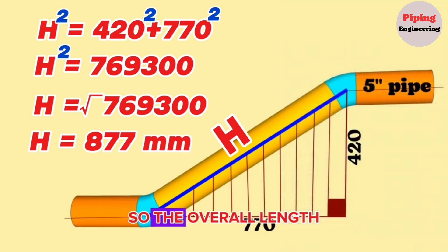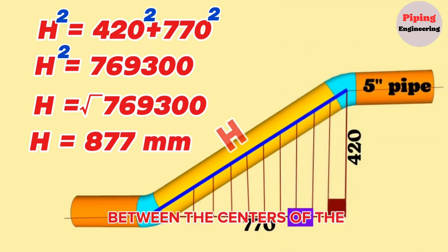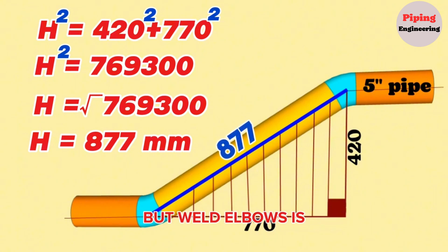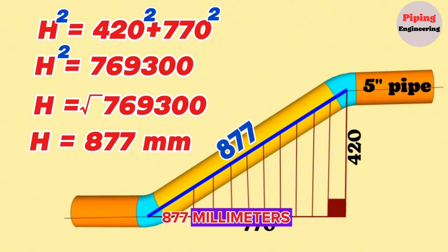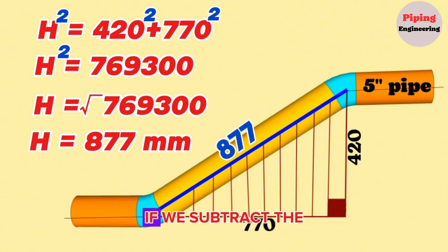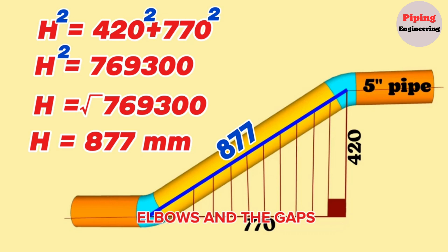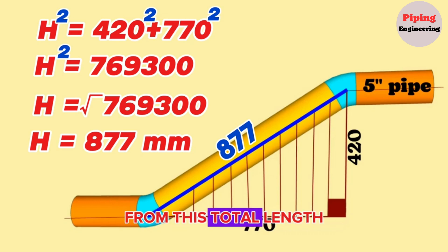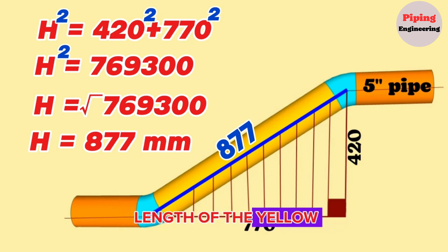So the overall length between the centers of the butt weld elbows is 877 mm. If we subtract the lengths of the cut elbows and the gaps for welding from this total length, we can find the length of the yellow color pipe section.